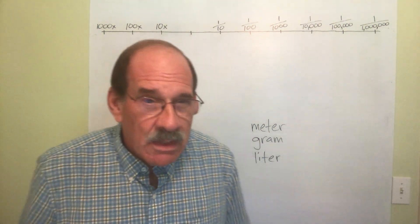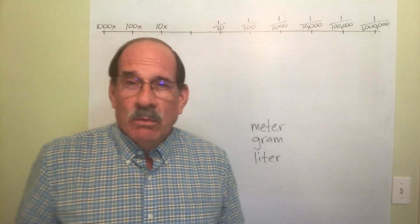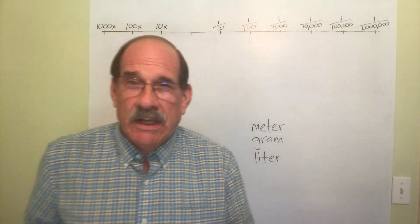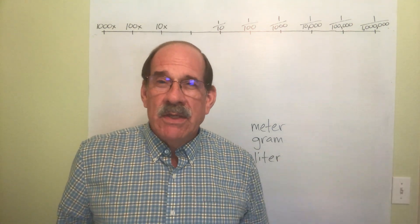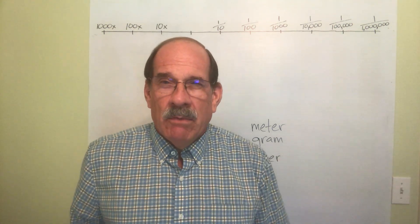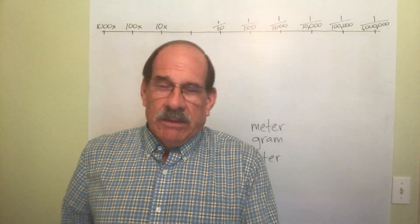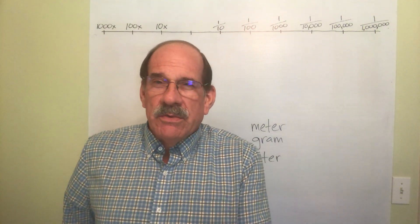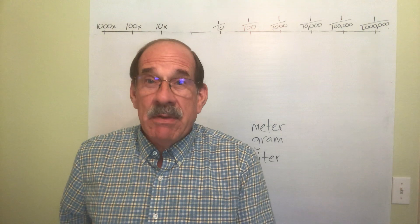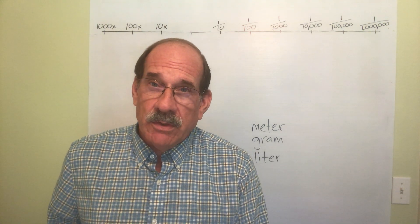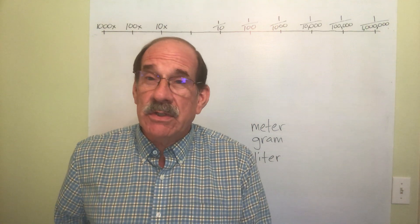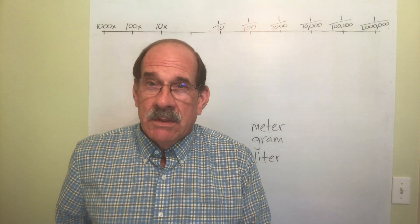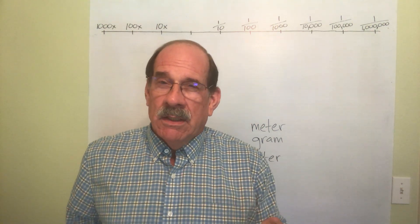We also need measurements for weight. We have things like pounds, ounces. If you live in England you weigh things in stones. We know some of those things. How many ounces are there in a pound? Well, you should know there are 16. We know those things, but doing conversions in those are very difficult.